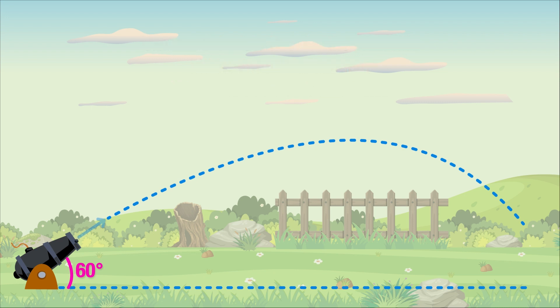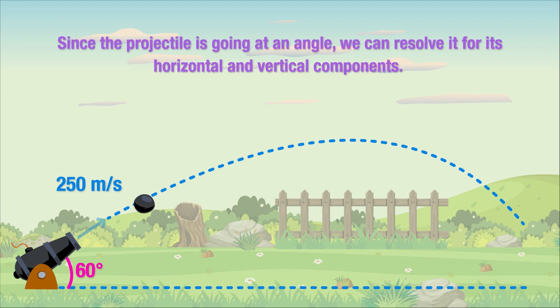Unlike our previous example, the initial trajectory of this projectile is not perpendicular. It's been fired at an angle of 60 degrees. This means that the projectile's velocity has both a vertical and a horizontal component. We want to calculate how far this projectile went, and for that, we need both of those components.